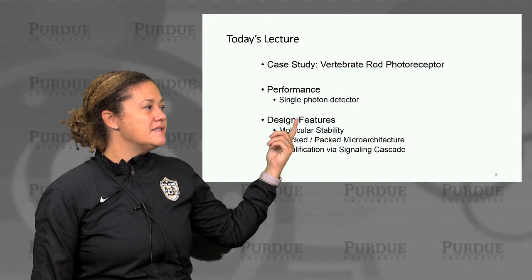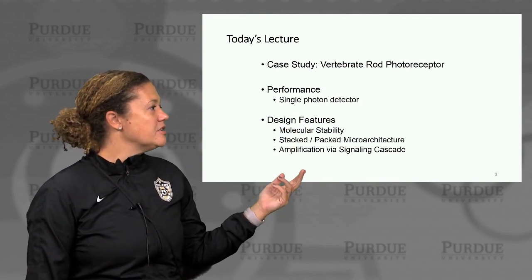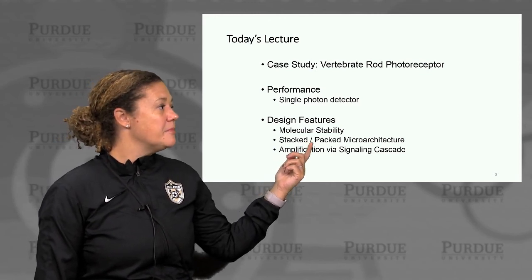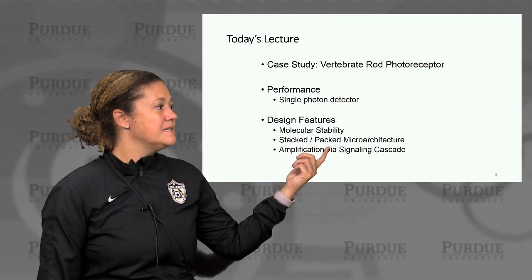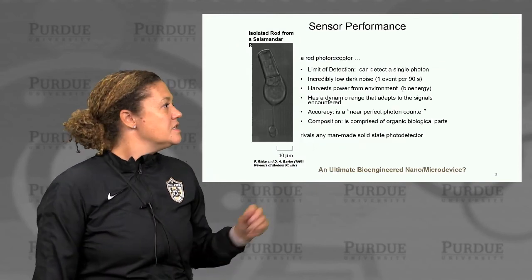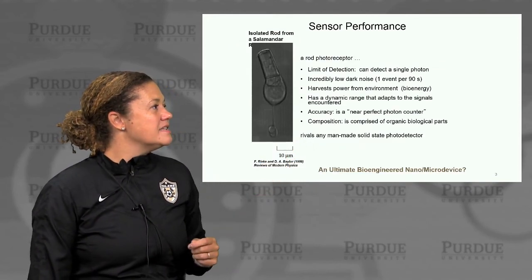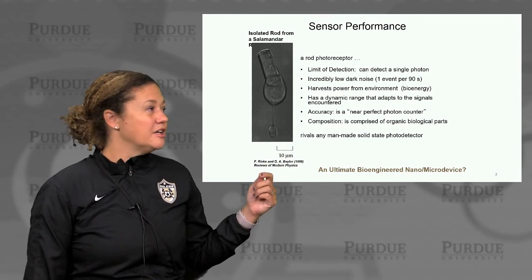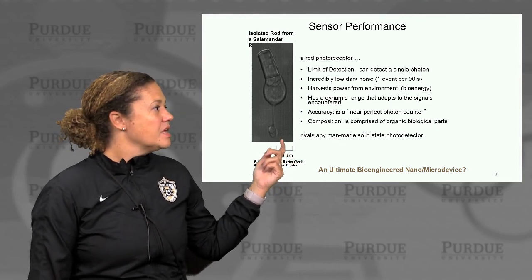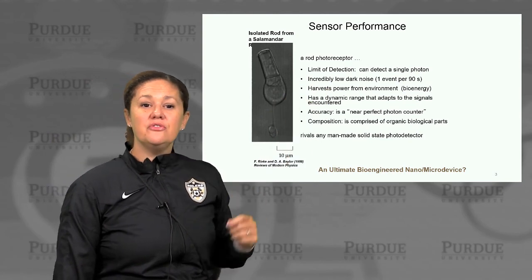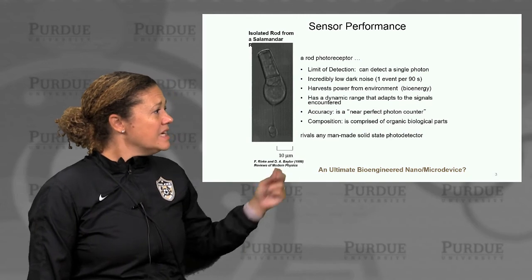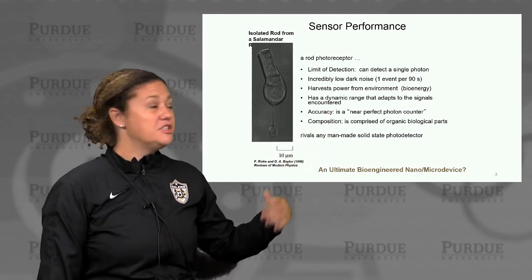We'll look at its performance as a single photon detector, and particularly highlight some of the design features of that cell that allow its performance — particularly the molecular stability, the stacked and packed microarchitecture, and amplification via signaling cascades. Here I have an image of an isolated photoreceptor rod from a salamander. The limited detection can detect a single photon, it has incredibly low dark noise, and it can harvest power from its environment essentially via bioenergy.